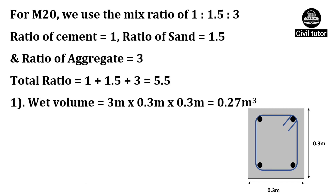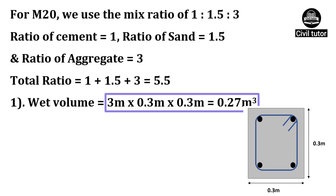Now, coming to the first step, in which we need to calculate the wet volume, which will be equal to the length of the beam multiplied by the area of cross section of the beam. On substituting these values, the wet volume will be equal to 0.27 meter cube.